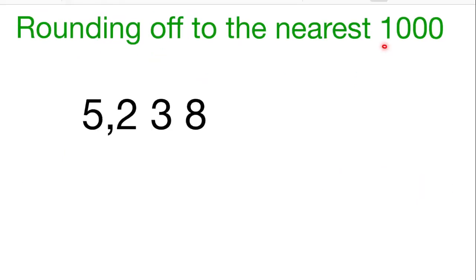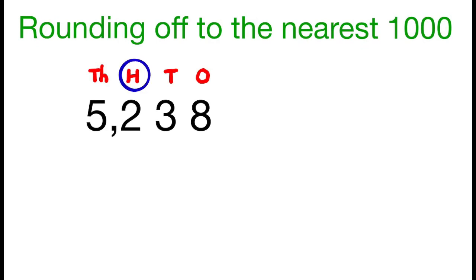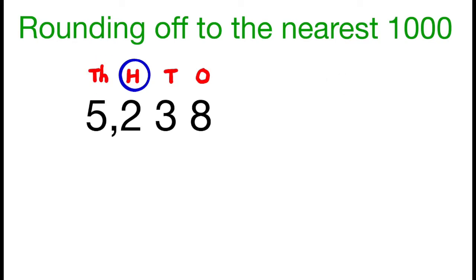Rounding off to the nearest thousands. To round off a number to the nearest thousands, we consider the hundreds and thousands place digits. If the digit in the hundreds place is less than 5, then there will be no change for the digit in the thousands place. If the digit in the hundreds place is greater than 5 or equal to 5, then we add 1 to the digit in the thousands place.